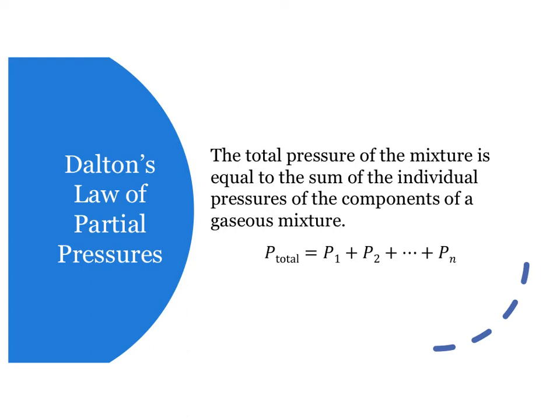A mixture of gases follows the same laws as a pure gas that is composed of only one substance. Dalton's Law of Partial Pressures states that the total pressure of the mixture is equal to the sum of the individual pressures of the components of a gaseous mixture. P total equals P1 plus P2 all the way through P sub n, the last gas in the mixture.